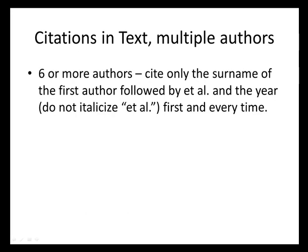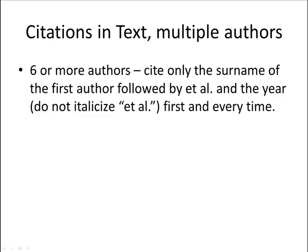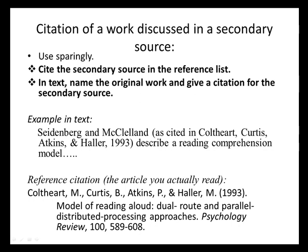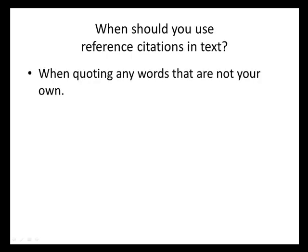For six or more authors in text, we only need to cite the surname of the first author followed by et al., first and every time. Citation of a work discussed in a secondary source — please use this sparingly, as it does not happen very often. APA prefers that you use primary sources. You cite the source that you actually read in the reference list, but you cite the primary source, the original work, in text, and then give the citation for the secondary source you actually read. For example, Seidenberg and McClendon's study was cited in an article by Colthart, Curtis, Atkins, and Holler in 1993 — that article is what we actually read, so that is what we put in our reference list.